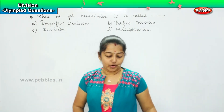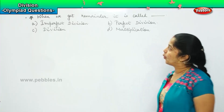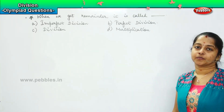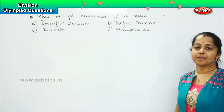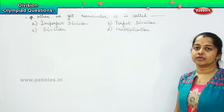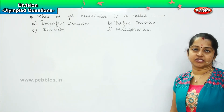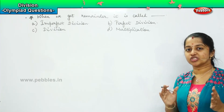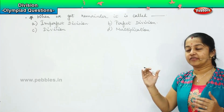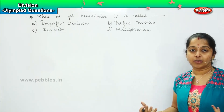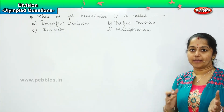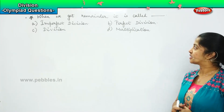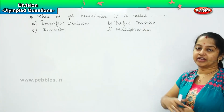So, what do you think will be the right answer? When we get a remainder, it is called as — what do you mean by 'perfect,' children? Something which has got nothing balance, right? So, when I have something in a huge amount and if I divide equally, if I have no remainder left, when I am able to perfectly divide the same, that is called as my perfect division.